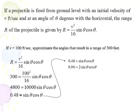So 0.48 = sin θ cos θ. I multiply both sides by 2. I get 0.96 = 2sin θ cos θ. 2sin θ cos θ, that should look very familiar. 2sin θ cos θ is sin 2θ.